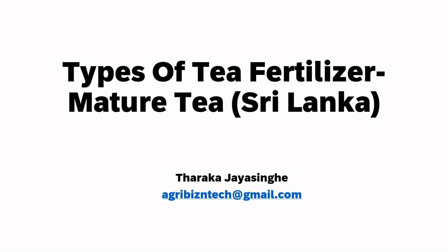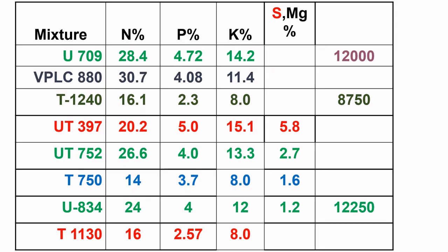Good day, and today we are going to talk about the type of fertilizer that can be used for maturity. Maturity means after the first prune — we consider that as maturity, which normally takes four years in Sri Lanka. In this video we are going to talk about what types of fertilizer can be used for maturity in Sri Lanka.